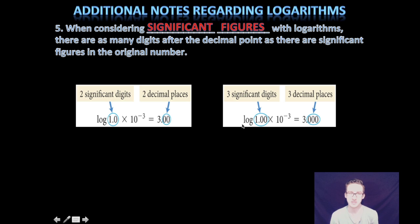And then the last little thing to throw in here to make your life even more exciting is there's a new rule when it comes to significant figures with logarithms. And so the extra rule here is when considering significant figures with logarithms, there are as many digits after the decimal point as there are significant figures in the original number. So as you look at your notes, if I were to take the common log of 1 times 10 to negative three, recognize that I have a total of two sig figs here. So my answer would have two digits after the decimal. Similarly, if I was taking the common log of 1.00 times 10 to negative three, because I have three total sig figs here, I need three digits after my decimal in what would essentially be my pH or pOH.